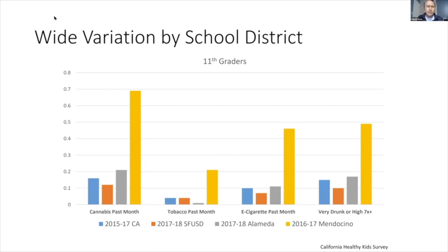There is some variation by school district, so it's useful to know your local data — California provides county-level data. Bay Area counties aren't far off the California mean, but some counties like Mendocino show that more than half of high schoolers report having used cannabis. Use actually varies quite a bit by county. This is self-report data, so comfort level with admitting use on a questionnaire may differ across populations and surveys.